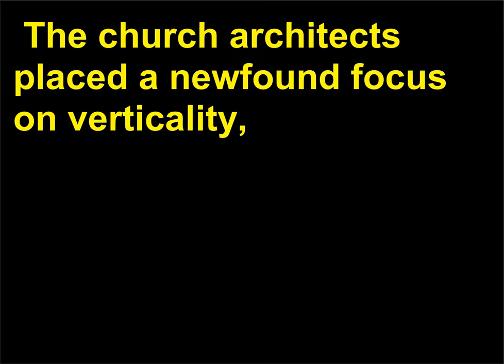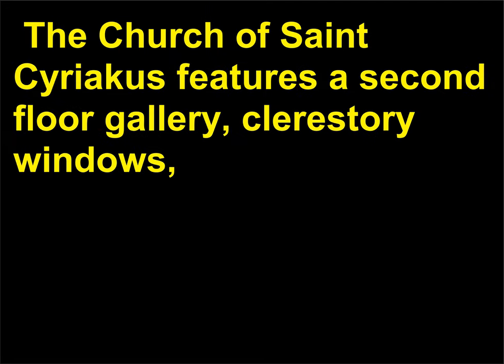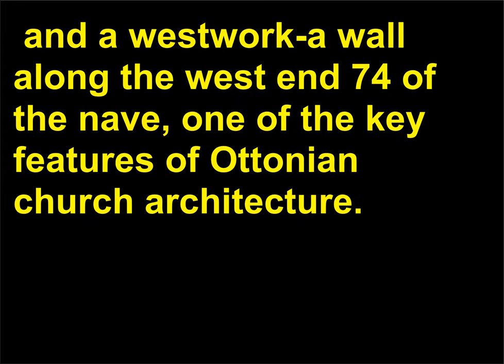The Church of St. Cyriacus placed a newfound focus on verticality, which foreshadowed the leaping heights of much later medieval buildings. It features a second-floor gallery, clerestory windows, and a Westwerk wall along the west end of the nave — one of the key features of Ottonian church architecture.